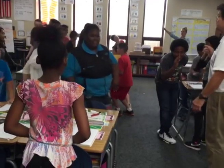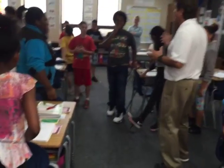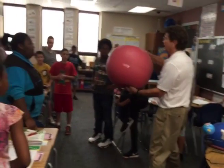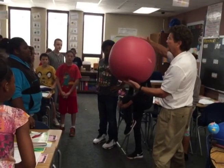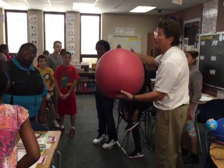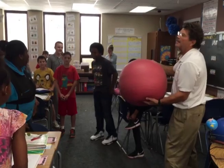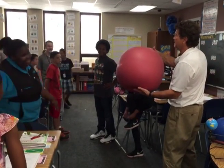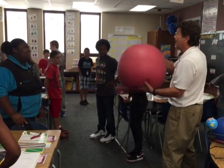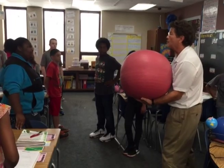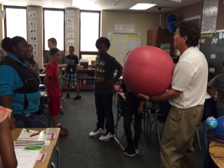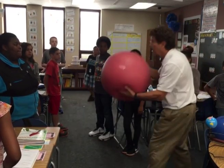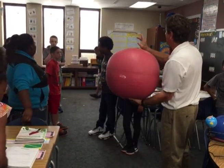We would never want the earth to suddenly stop rotating. This is a model — this is the earth. Imagine: if the earth stopped rotating all at once, all the mountains, all the lakes, all the people, all the buildings would keep going and destroy themselves in about one second. So we definitely don't want the earth to stop rotating suddenly.